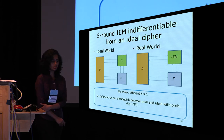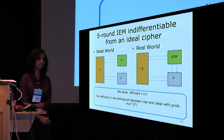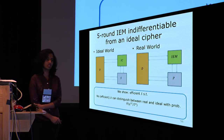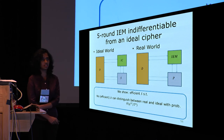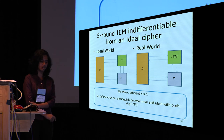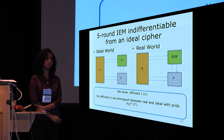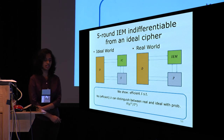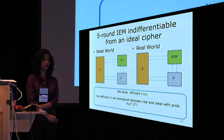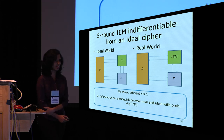In conclusion, we showed that the five-round iterated Even-Mansoor construction with trivial key schedule is indifferentiable from an ideal cipher. We exhibit an efficient simulator S using the partial chain detection and preemptive completion strategy such that no distinguisher making at most q queries can distinguish real from ideal with probability greater than q^12 / 2^n, where n is the round permutation's input/output size.